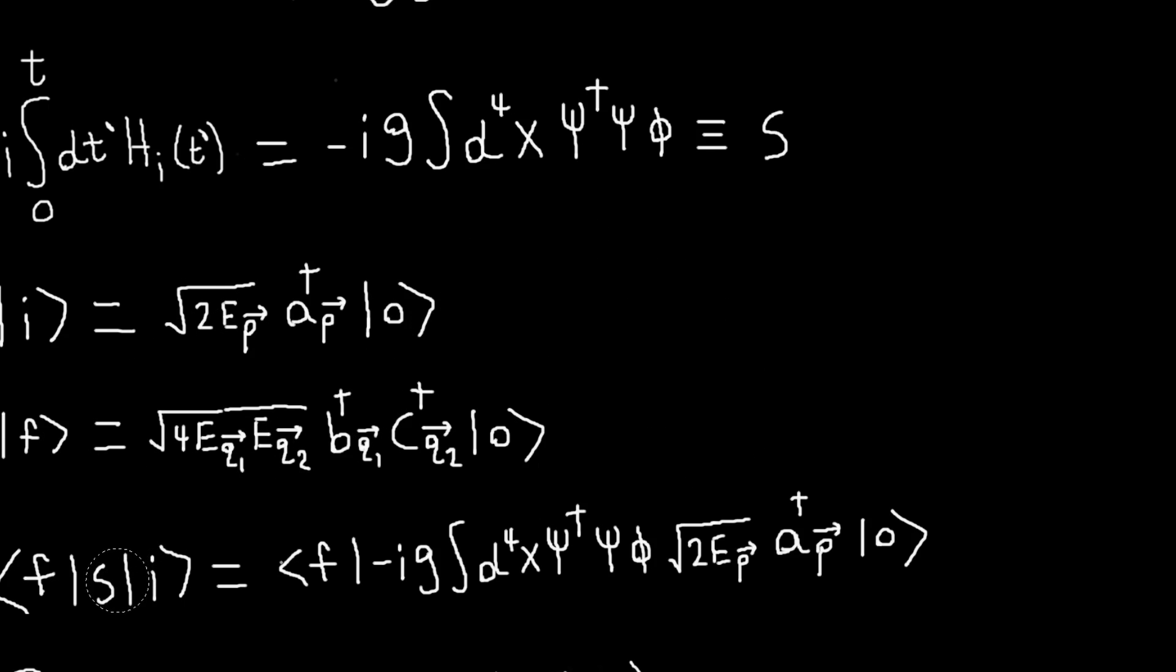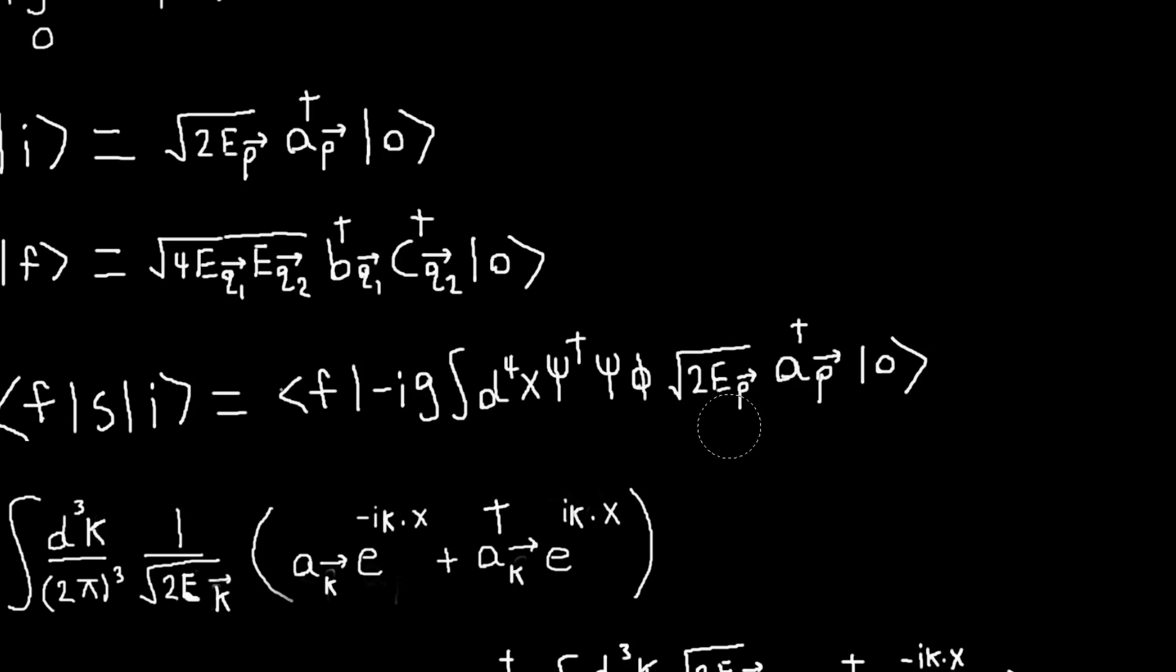So, we can calculate that by just evaluating this matrix element. And if I just write out my S and my i here, I get this. And I'll just leave f alone, so I'll work one field at a time here, so I'm kind of just leaving the psi dagger and psi alone. And we know our phi in the Heisenberg picture, we can expand that like this. And so, we'll need to write that in for phi.